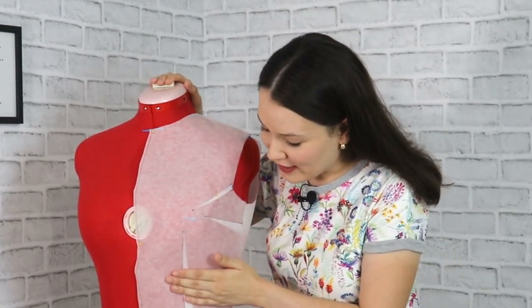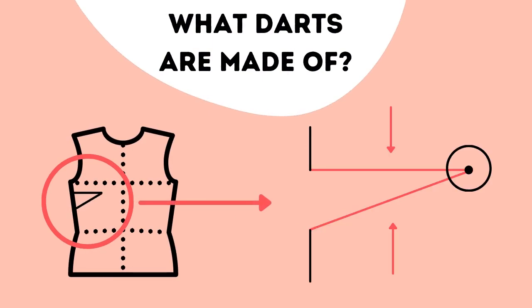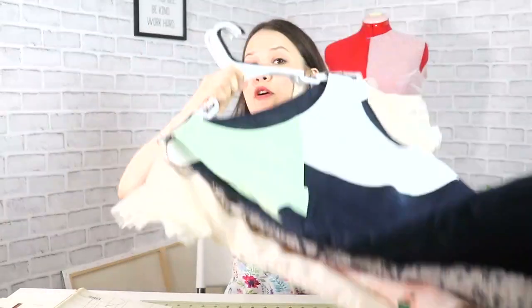First, very quickly, let's go over the anatomy of a dart, so that if I use any of that terminology in this video, you will know exactly what I'm talking about. Basically, a dart is a triangle. These are dart legs. This is the dart point. And this is the dart volume. Now that we have that sorted out, let's go ahead and take a look at the definition of what a dart is.